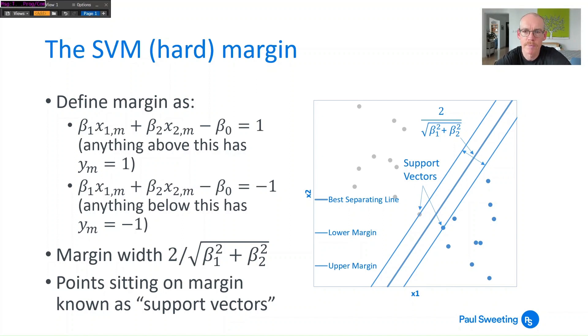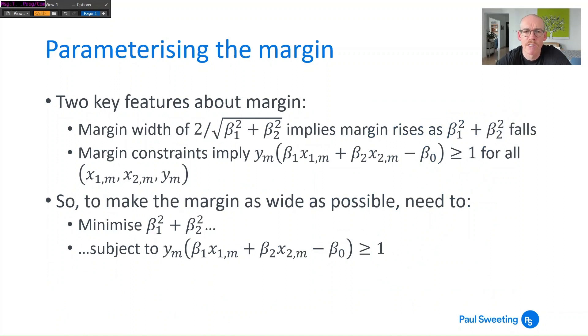So two key features about this margin: this margin width of 2 over the square root of β₁² plus β₂², what that implies is that as β₁² plus β₂² falls the margin gets bigger. And the margin constraints imply that yₘ multiplied by the expression inside those brackets (β₁x₁ₘ plus β₂x₂ₘ minus β₀) is always going to be greater than or equal to 1 for any combination of x₁ₘ, x₂ₘ, yₘ if the data is linearly separable. So if we want to make the margin as wide as possible what we need to do is minimize β₁² plus β₂² because that gives you a bigger margin subject to that constraint that yₘ multiplied by the stuff inside the bracket is greater than or equal to 1.